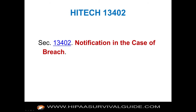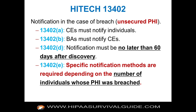Notification must be no later than 60 days after discovery. Section 13402E specifies notification methods depending on the number of individuals whose PHI was breached. Section 13402F requires specific content in the notification. Section 13402H defines unsecured PHI — PHI that's not secured through encryption and/or destruction as provided by HHS guidance. The methods must render the PHI unusable, unreadable, or indecipherable.